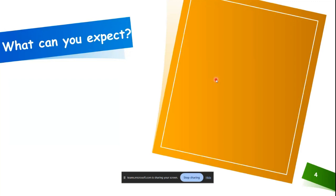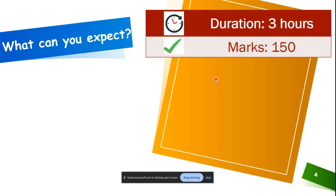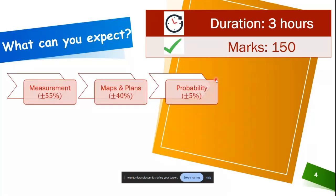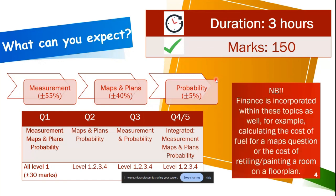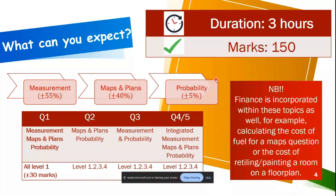Let's have a look at what you can expect in Paper 2. Similar to Paper 1, Paper 2 is a duration of three hours and 150 marks, consisting of the following topics: measurement, maps and plans, as well as probability. Question 1 is a mixture of all three topics. Question 2 covers maps and plans with some probability. Question 3 includes measurement and probability, and questions 4 and 5 integrate all of those topics.